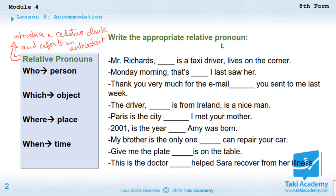We will understand them even better after doing this exercise. We will write the appropriate relative pronoun. 'Mr. Richards is a taxi driver ___ lives on the corner.' Here, as we said, a relative pronoun refers to an antecedent.